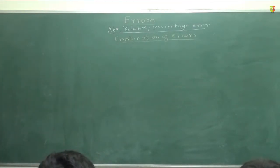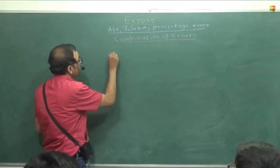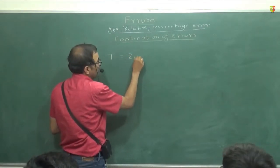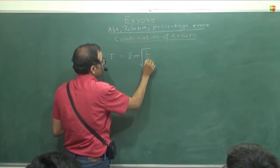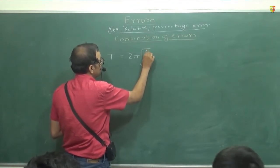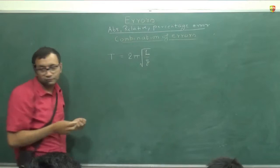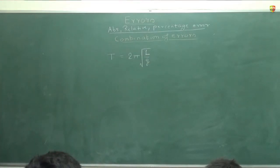Next question. Please focus here. Time period of oscillation of a pendulum. You know what it is? T is equal to 2 pi under root L by G. This is the formula.